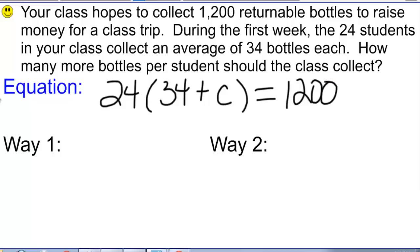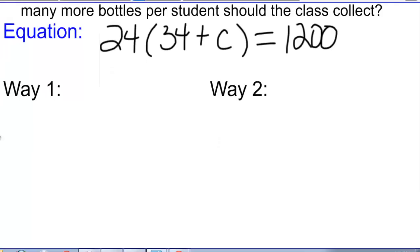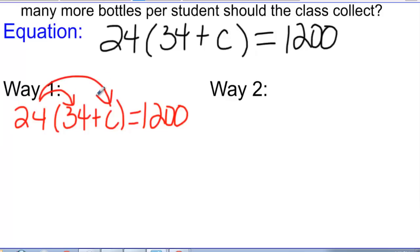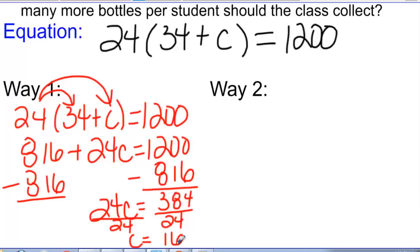There are two ways we can solve this equation. I'm going to copy my equation down. The first thing I could do is use the distributive property and multiply 24 times 34 and 24 times c. So I would get 816 plus 24c equals 1,200. Now I just have a two-step equation that I need to solve. I ended up with c equals 16.